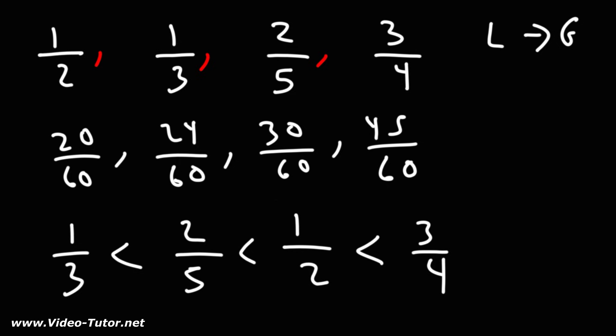So 1 over 3 is the smallest fraction. 3 over 4 is the largest fraction. So that's how we can order fractions from least to greatest. First you want to get common denominators, then you want to compare the numerators and then you can put them in order by doing so and then you could rewrite the original fractions in order from least to greatest.